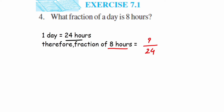The total is 24 and we're talking about 8, so it will become 8 upon 24. But this is not in reduced form, so we're going to cancel — 8 ones and 8 threes — so the answer will become 1 upon 3.